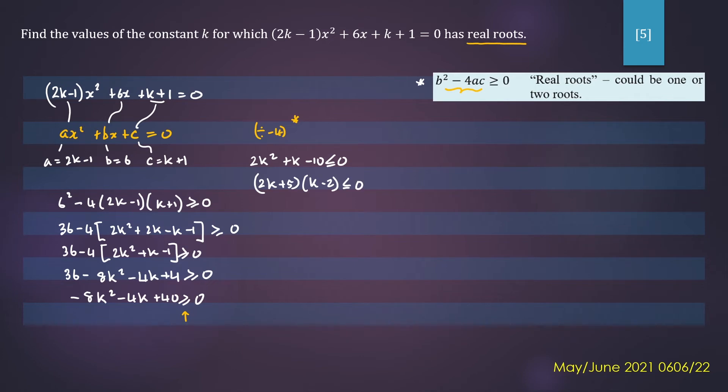There are a few ways to solve quadratic inequalities. So let's try the graphical method. We will let y = (2k + 5)(k - 2).